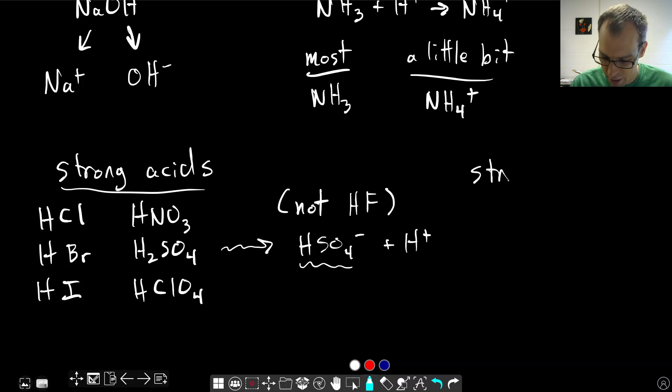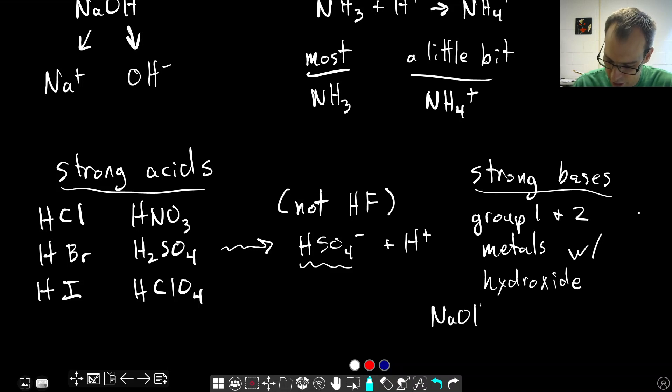In terms of strong bases, instead of a specific list to memorize, what you just need to remember is that strong bases are combinations of group one and two metals with hydroxide. So any ionic compound like sodium hydroxide, or potassium hydroxide, or calcium hydroxide. Anything that forms a hydroxide from the group one or two metals, these are strong bases because these dissolve completely in water, form hydroxide ions, which are strong bases.